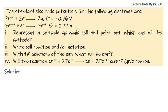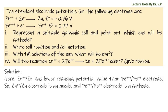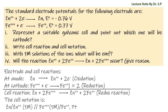Solution: Here, zinc electrode has lower reducing potential value than iron electrode. So zinc electrode is an anode and iron electrode is a cathode. At anode, oxidation reaction occurs, and at cathode, reduction reaction occurs.